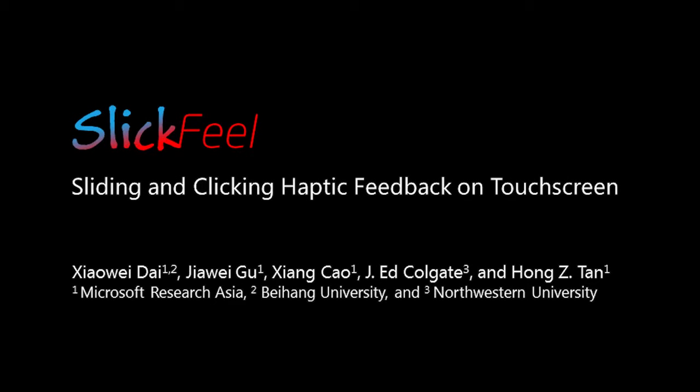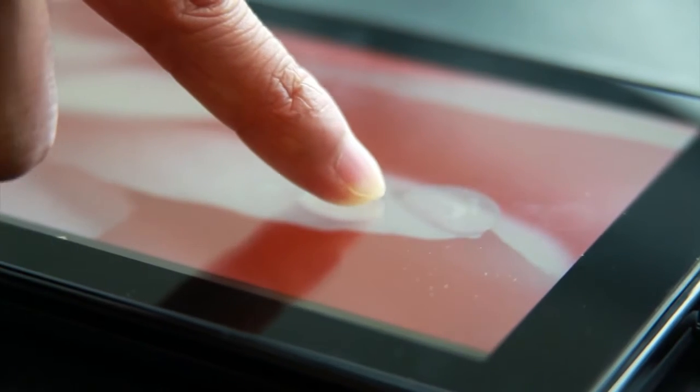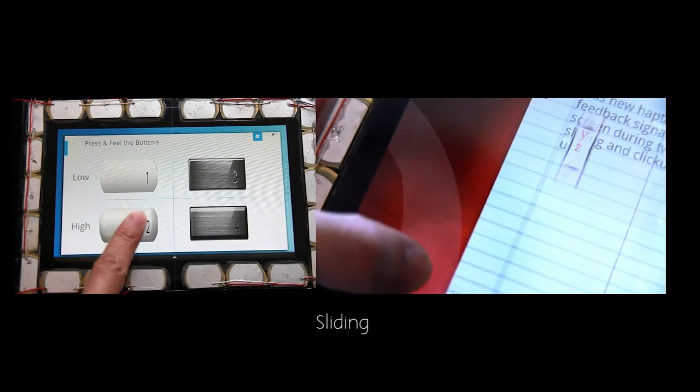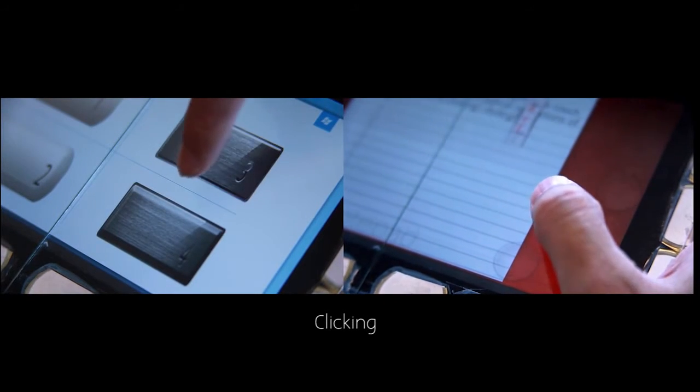In this demonstration, we show a new haptic display that delivers touch feedback to a finger on a touch screen. We provide different feedback depending on whether the finger is sliding on the screen or clicking an object on the screen.